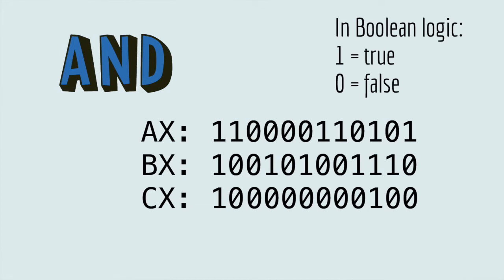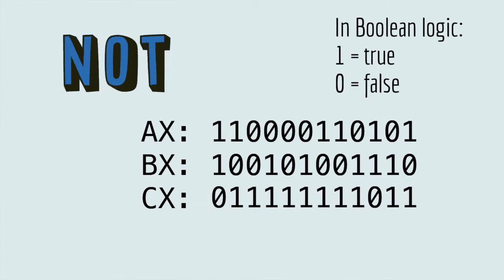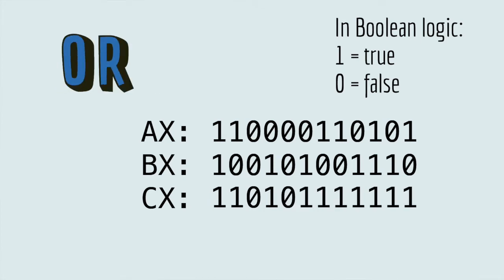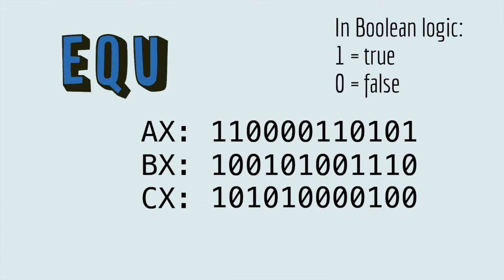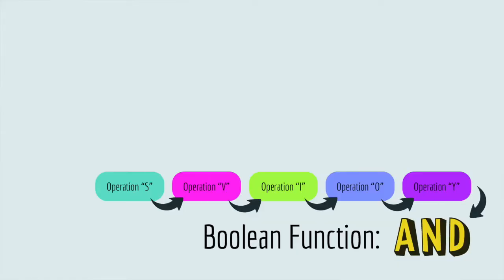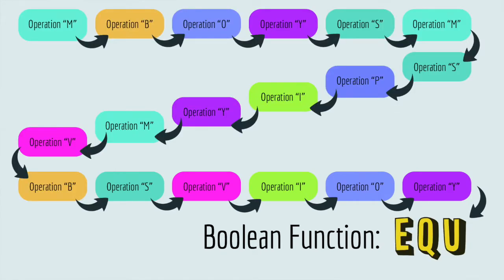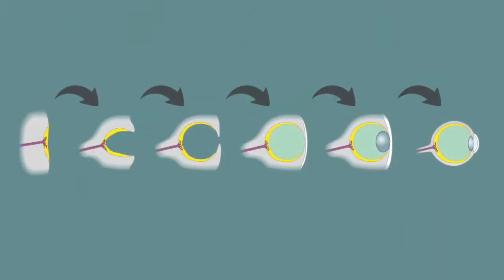There are other Boolean functions that result in different output strings, like NOT, OR, and equals, to name a few. In AVIDA, Boolean functions are complex features because none of the individual operations can perform a Boolean function on its own. So in order for the AVIDian to perform a Boolean function, it has to have its operations in just the right order. Some Boolean functions require a lot of operations to happen in just the right order — unlike how it takes a lot of specific steps to evolve an eye.